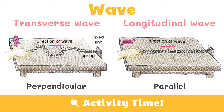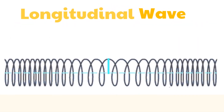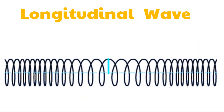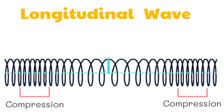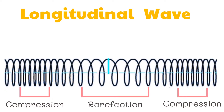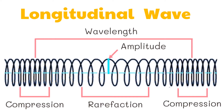Now let's talk about the parts of a longitudinal wave and transverse wave. The region where the coils are pressed together in a longitudinal wave is called a compression. On the other hand, the region where the coils are spread out is called rarefaction. The maximum displacement of the particles of the medium from their equilibrium position is called the amplitude of a wave. Meanwhile, wavelength is the distance between two successive compressions or rarefactions.